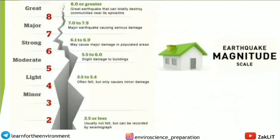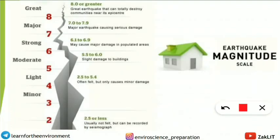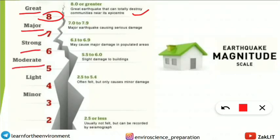Next, the second concept is the earthquake magnitude scale. This question was asked in the last examination. Note down: magnitude 8 or greater is called a 'great' earthquake and can totally destroy communities near its epicenter. Magnitude 7 to 8 is 'major.' Magnitude 6 to 7 is 'strong.' Magnitude 5 to 6 is 'moderate.' Magnitude 4 to 5 is 'light.' Magnitude 3 to 4 is 'minor.'